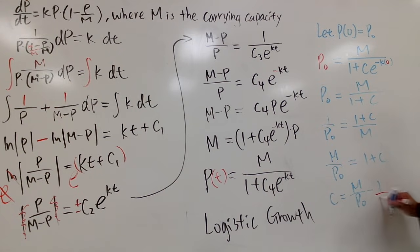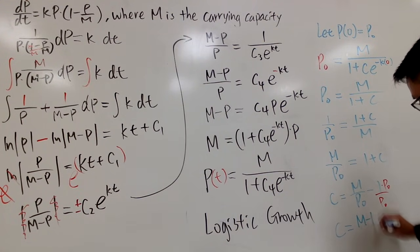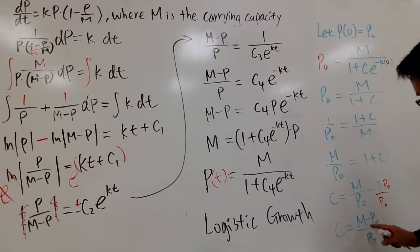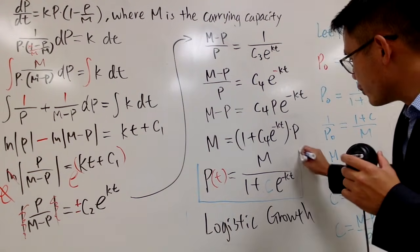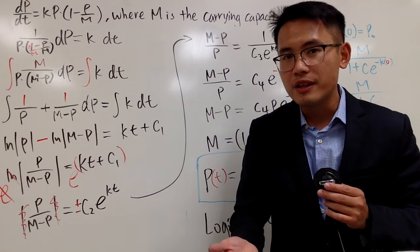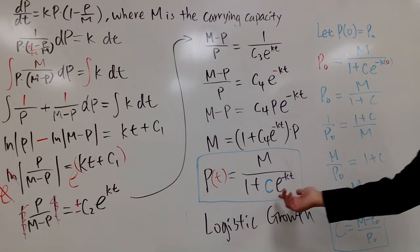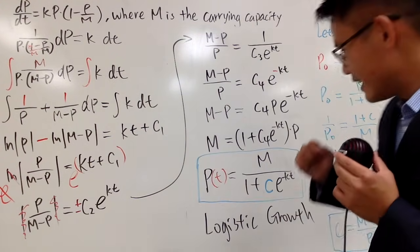Dividing both sides by the bracket, we get p by itself — the population — equal to M on top over 1 plus c4 e to the negative kt. This is the standard form for the logistic growth equation. In function notation, we write p of t equal to M over 1 plus c e to the negative kt. This is the general form. If you're given the initial population p of 0 equal to p0, you can plug t equal to 0 to find c: c equals M minus p0 over p0. So if given the initial population, use the carrying capacity minus the initial population divided by the initial population to find c.